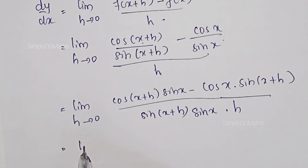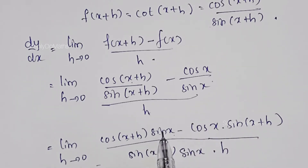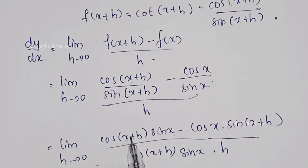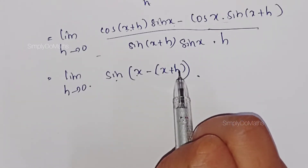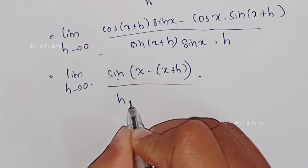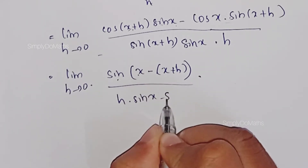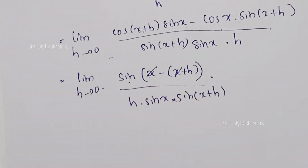This is in the form sin(a)·cos(b) minus cos(a)·sin(b). In place of a we have x, and in place of b we have x+h. The total formula becomes sin(a−b), so sin(a−b) = sin(x − (x+h)), and x and x cancel, divided by h·sin(x)·sin(x+h).